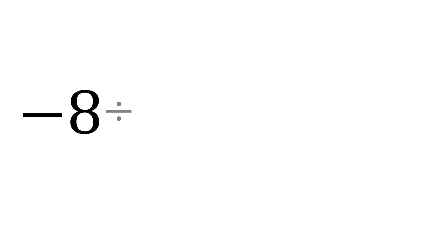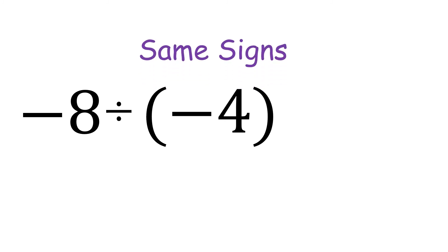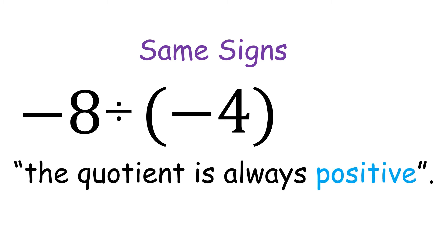Another one: negative 8 divided by negative 4. They have the same signs — both negative — so the quotient is always positive. Negative 8 divided by negative 4 is 2, and it is positive.